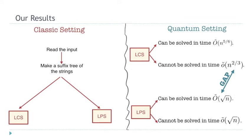Our conceptual contribution is that the situation changes in the quantum setting. We first show that both problems can be solved in sublinear time. For LPS, our algorithm runs in time √n. For LCS, it runs in time n^(5/6), ignoring polylog factors. We also give lower bounds: √n for LPS and n^(2/3) for LCS. The combination of these results shows there is a difference between LCS and LPS — LPS can be solved in √n, but there is an unconditional lower bound of n^(2/3) for LCS. So the two problems are definitely not equivalent in the quantum setting.